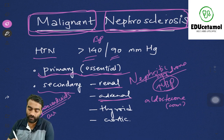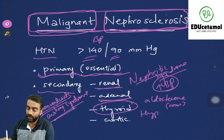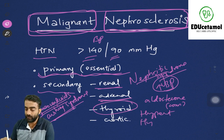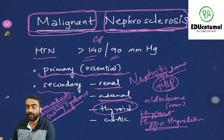Thyroid diseases can also cause increased blood pressure. Do not think only hyperthyroidism can cause increased blood pressure — even hypothyroidism can. In hyperthyroidism, the metabolic rate increases, the stroke volume is increased, the heart rate is increased, and obviously the blood pressure is going to get increased.